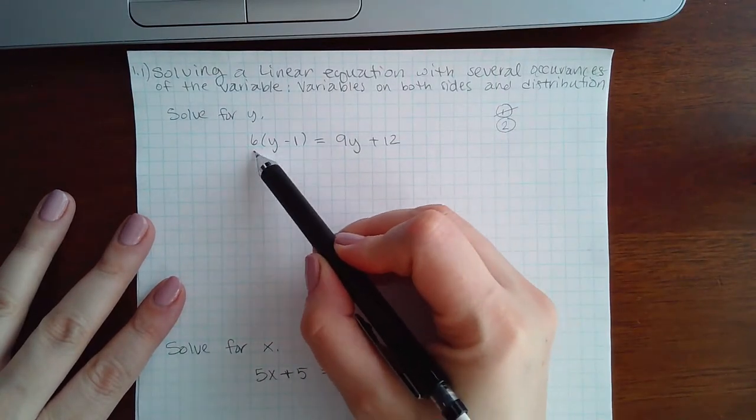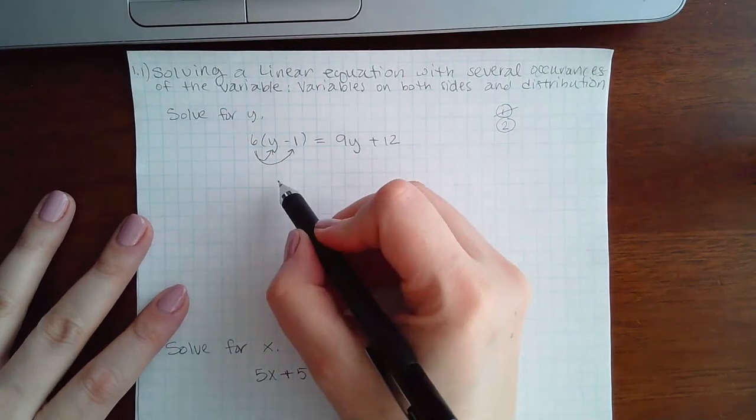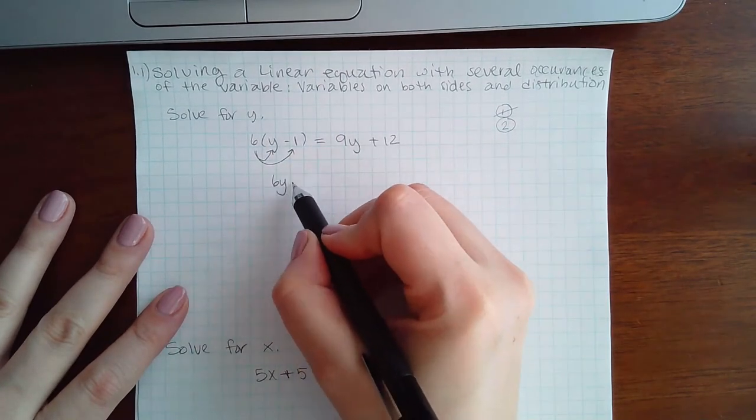So to eliminate this parentheses, we're going to distribute this 6. So we have 6y minus 6.